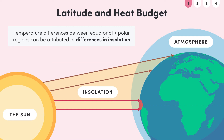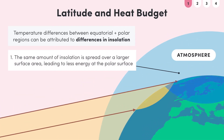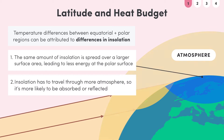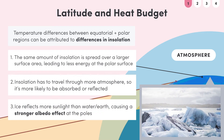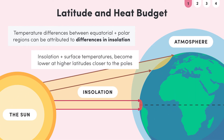In contrast, the poles never face the sun directly, meaning insolation can only reach the surface near the poles at an angle. So the same amount of insolation is spread over a larger portion of the polar surface when compared to the equator, leading to less energy at the surface. It also has to travel through more atmosphere, so is more likely to be absorbed or reflected. Finally, ice reflects more sunlight than water or earth, causing stronger albedo effects at the poles. A combination of all of this means that insolation, and therefore surface temperatures, become lower at higher latitudes closer to the poles.